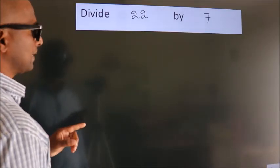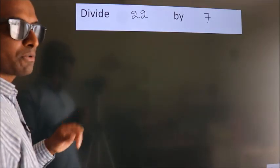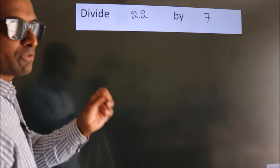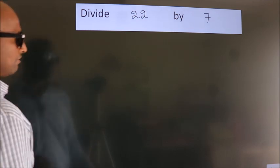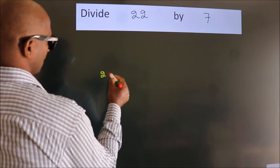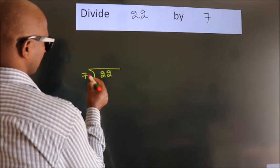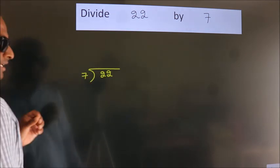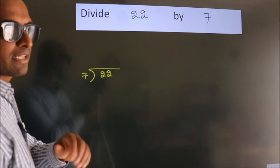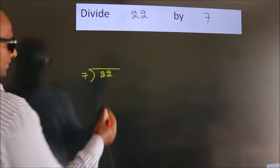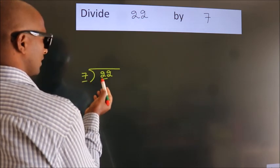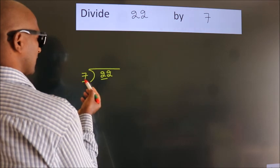To divide 22 by 7, we should frame it in this way: 22 here, 7 here. This is step one. Next, we have 2 here. 2 is smaller than 7.